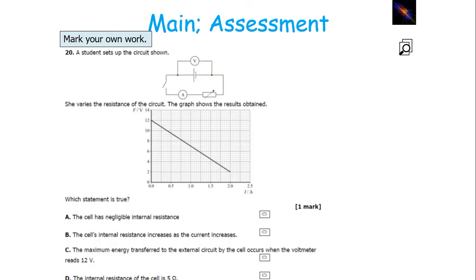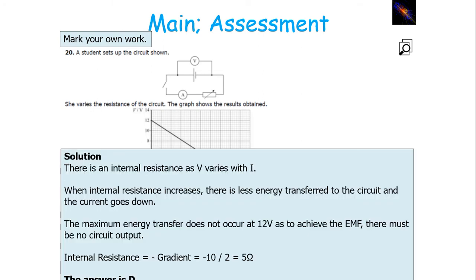This circuit is measuring the internal resistance of the power supply. It can't have a negative internal resistance, because V is varying with R, indicating there must be resistance in the power supply. When internal resistance increases, there's less energy transfer to the circuit so the current goes down. The maximum energy transfer doesn't occur at 12 volts, as to achieve the EMF there must be no circuit output. The internal resistance is the negative gradient of the line, which is minus 10 over 2, so it's 5 ohms. The answer is D.